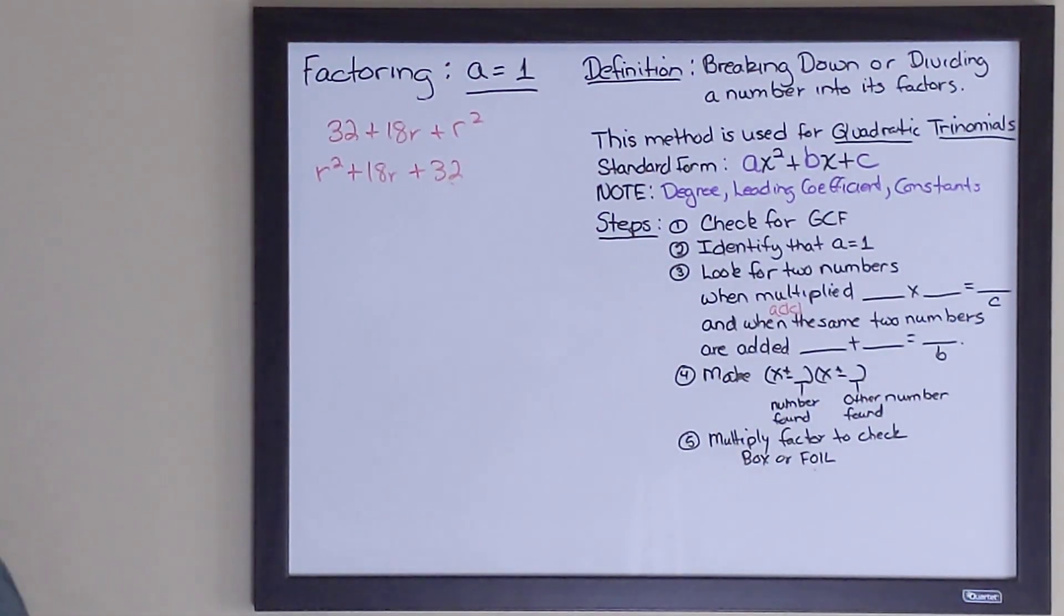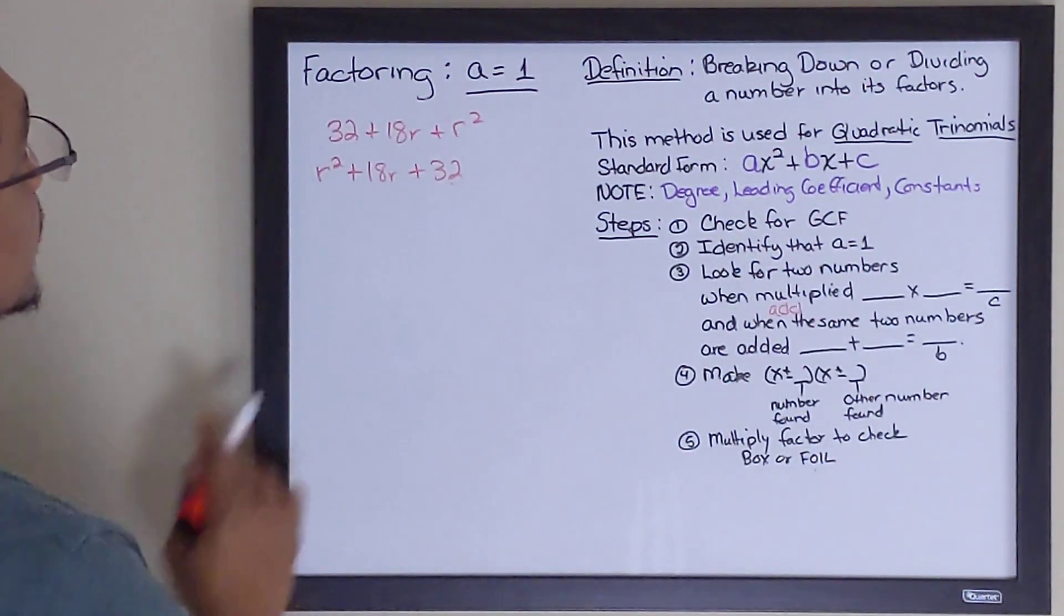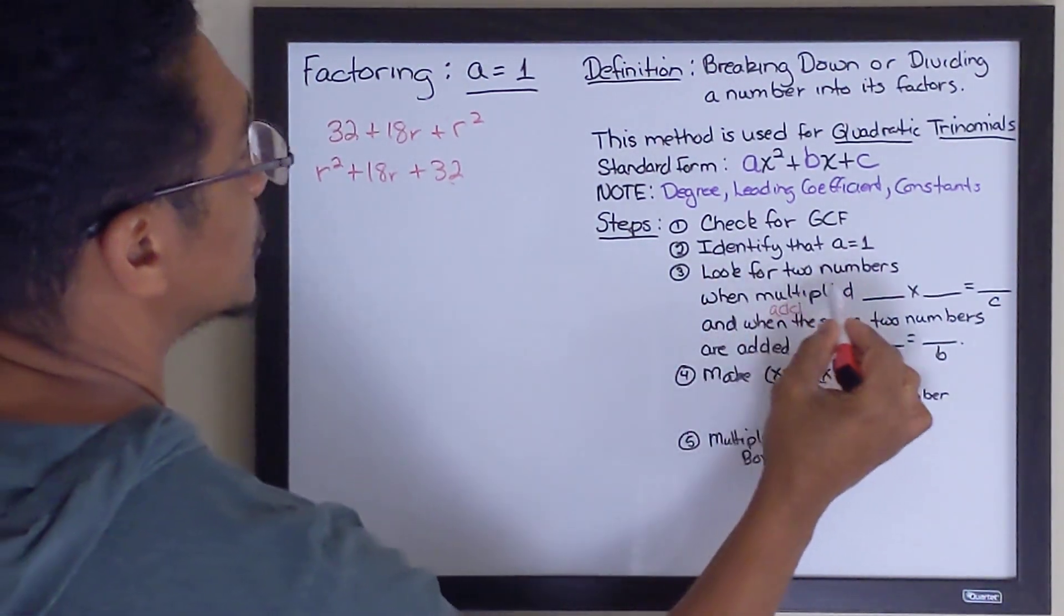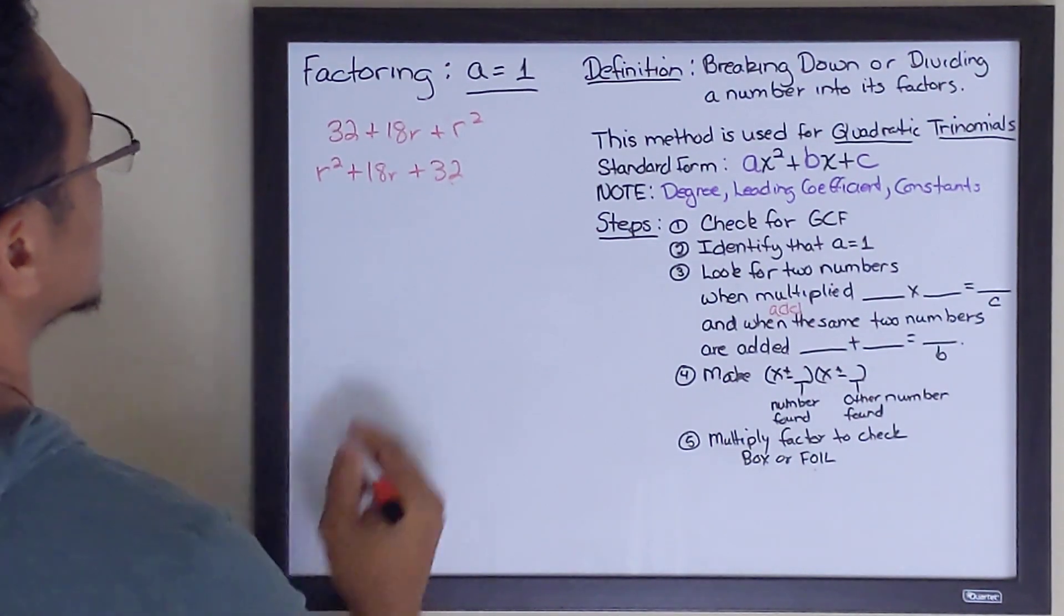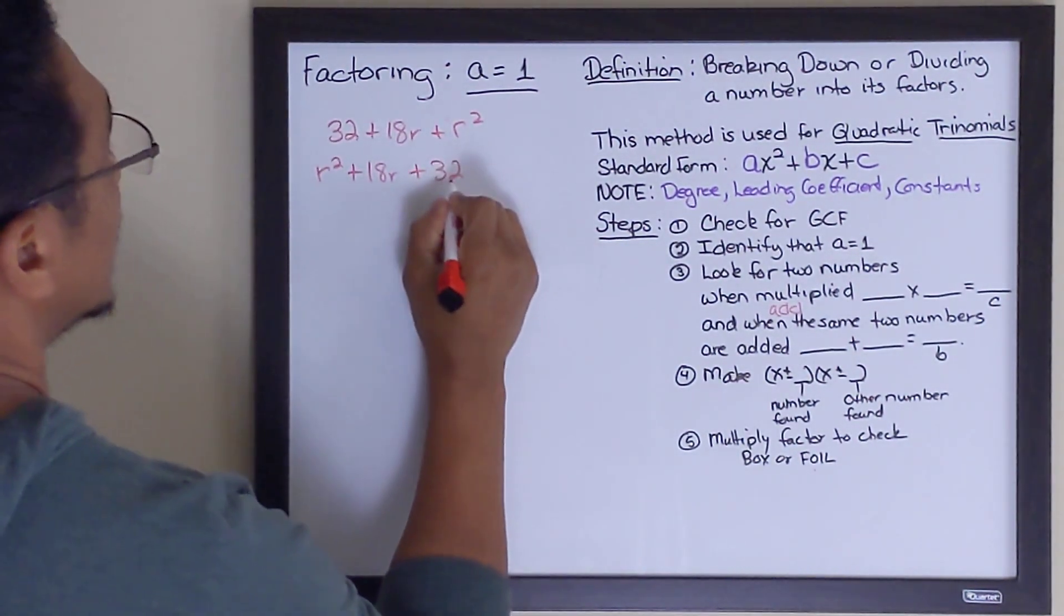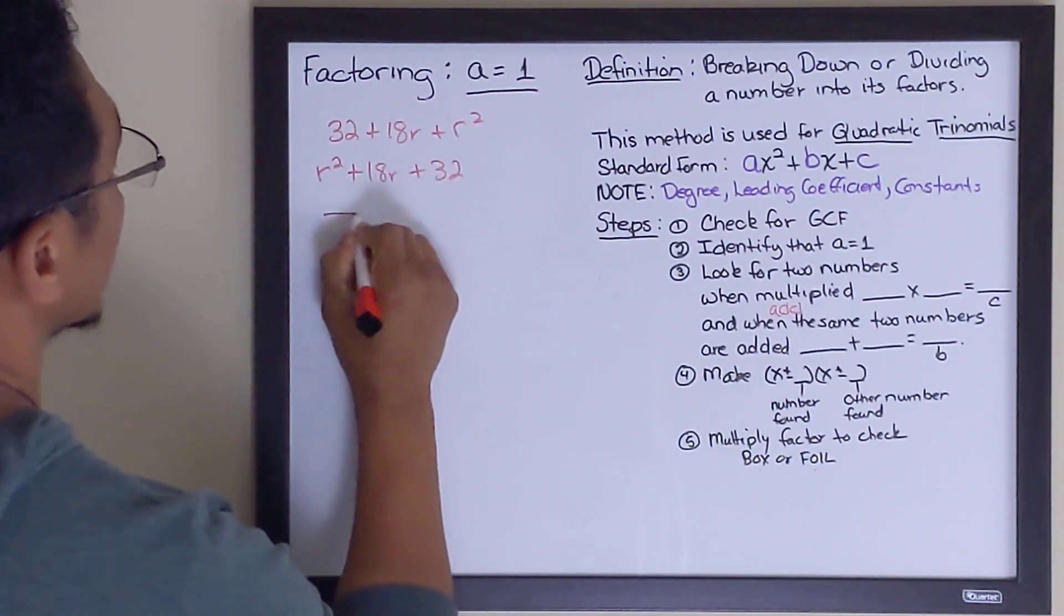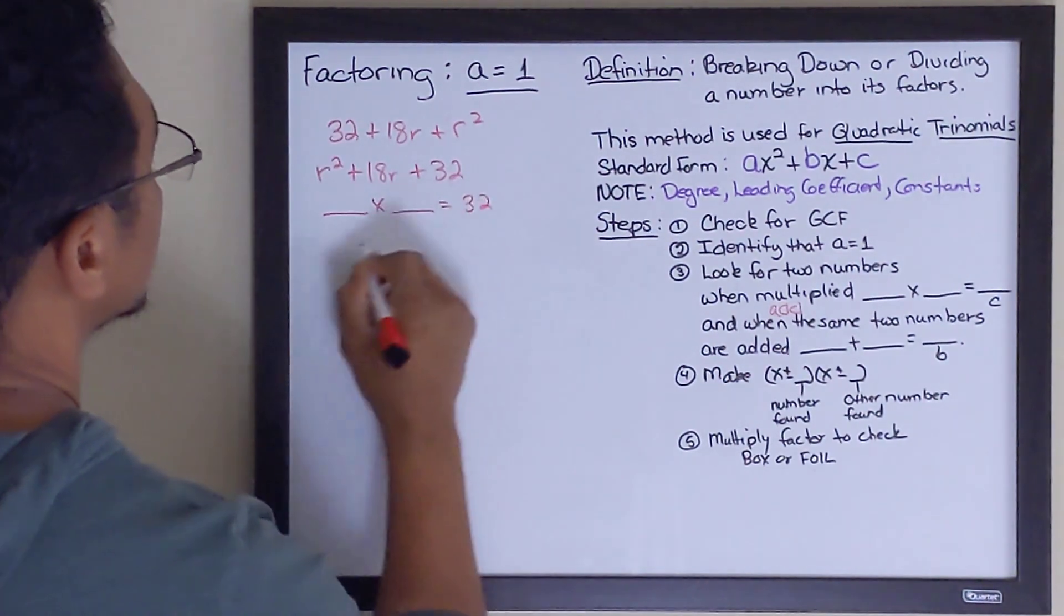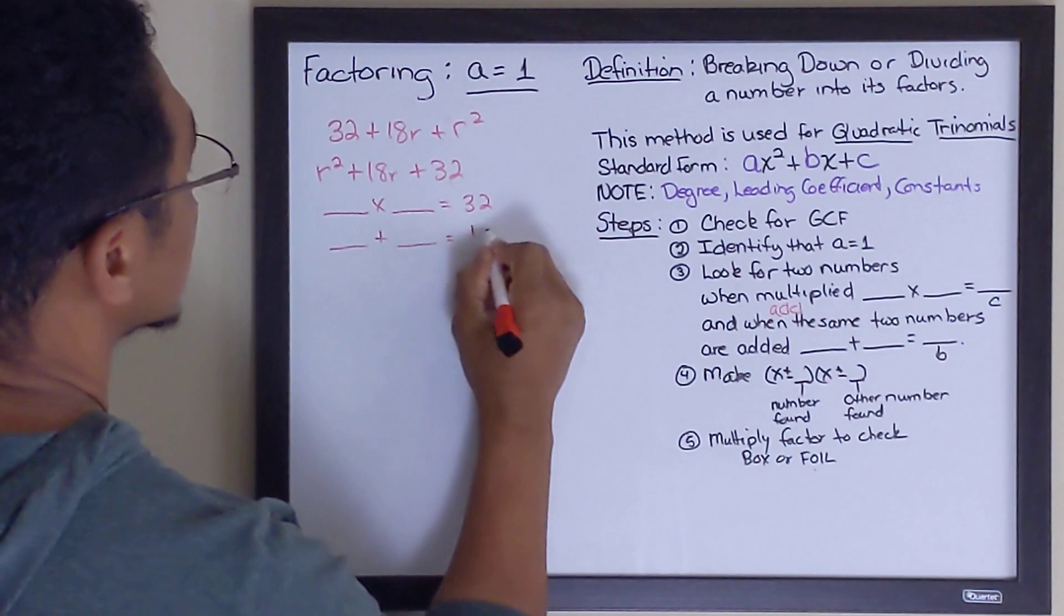So now let's go ahead and factor it. The first step, once again, check for GCF, which there's no GCF in this case. We've already identified that. The next step is look for two numbers. When I multiply them together, I get the value of c, which is 32. And then when I add them together, I get the value of 18. So I want to look for two numbers that multiply to 32 and add to 18.